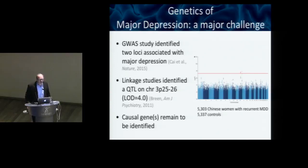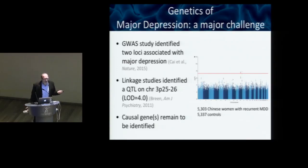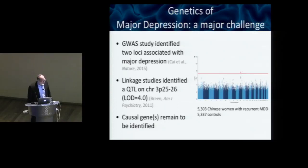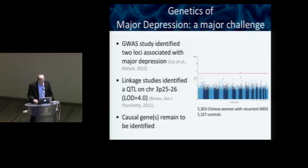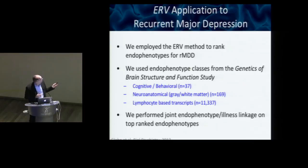This is still only explaining a tiny fraction of the effect, but it shows it is possible to find something. The Psychiatric Genetic Consortium is currently working to have 100,000 individuals with depression and 250,000 controls. Jerome Green and colleagues also identified a QTL on chromosome 3P25 associated with major depression, particularly among those who smoke a lot, but causal genes remain to be identified.